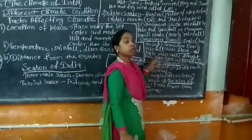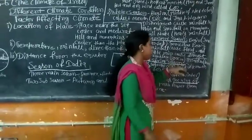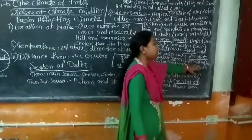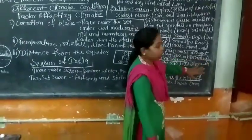The rainfall in the monsoon season is about 800 cm and about 10 cm.